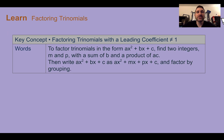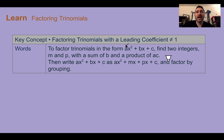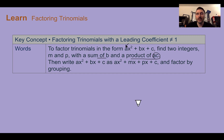Let's learn factoring trinomials with a leading coefficient not equal to 1. When the leading coefficient is not 1, there's a number out front used for a. Instead of multiplying to c and adding to b, this time we multiply to a times c and still add to b. Once we find those factors, we use grouping — which we learned in the last lesson — to factor with the GCF of each part.